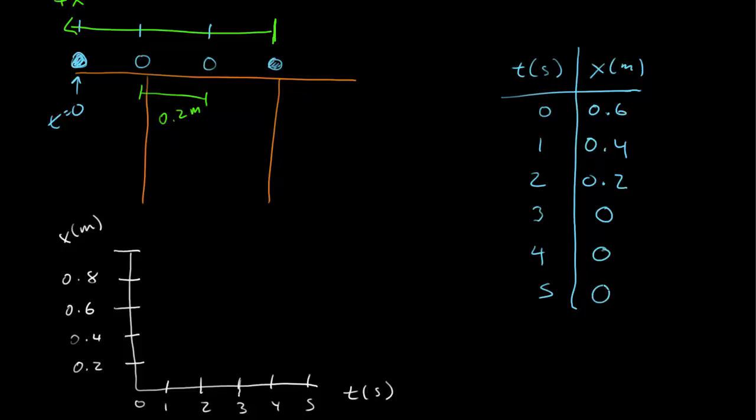So now if I want to graph this data, at 0 it's at 0.6. At 1, it's 0.4. At 2, it's 0.2. At 3, now it's 0, and it stays at 0. So the graph looks like this with this coordinate system. Same event, but with a different choice of origin and choice of direction of the coordinate system, you have a different tabular and graphical representation of the data.